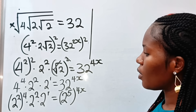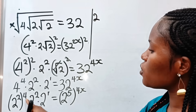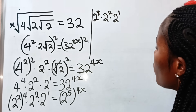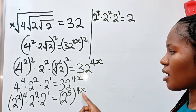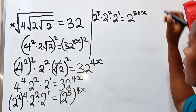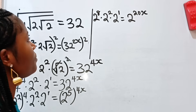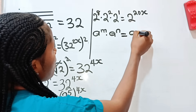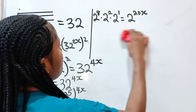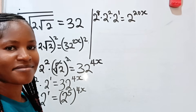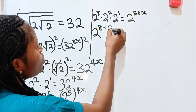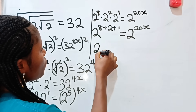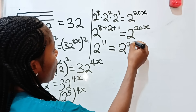Now we continue. We can write this as 2 to the power of 2 times 4, which is 8, multiplied by 2 to the power of 2, multiplied by 2 to the power of 1, is equal to 2 to the power of 5 times 4x, which gives us 2 to the power of 20x. Remember that a to the power of m multiplied by a to the power of n is equal to a to the power of m plus n. So we will now write this as 2 to the power of 8 plus 2 plus 1, is equal to 2 to the power of 20x. So we have 2 to the power of 11, is equal to 2 to the power of 20x.